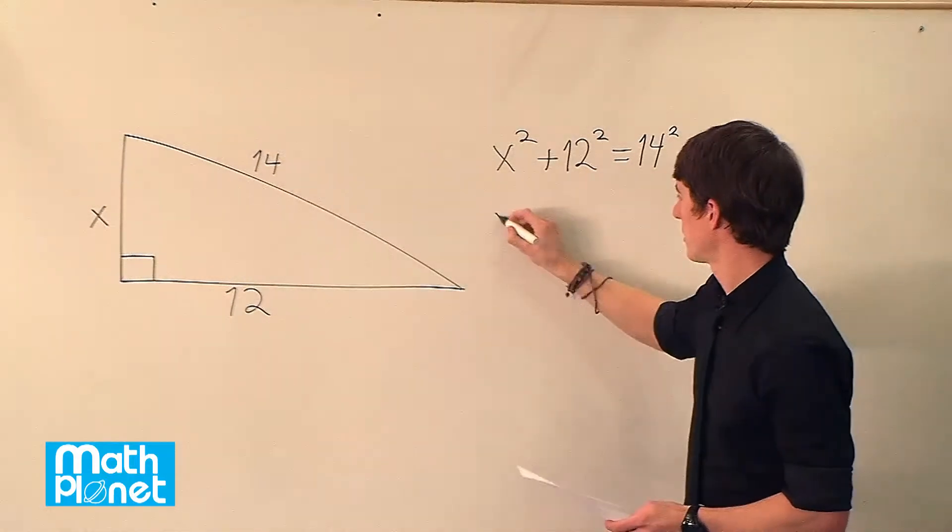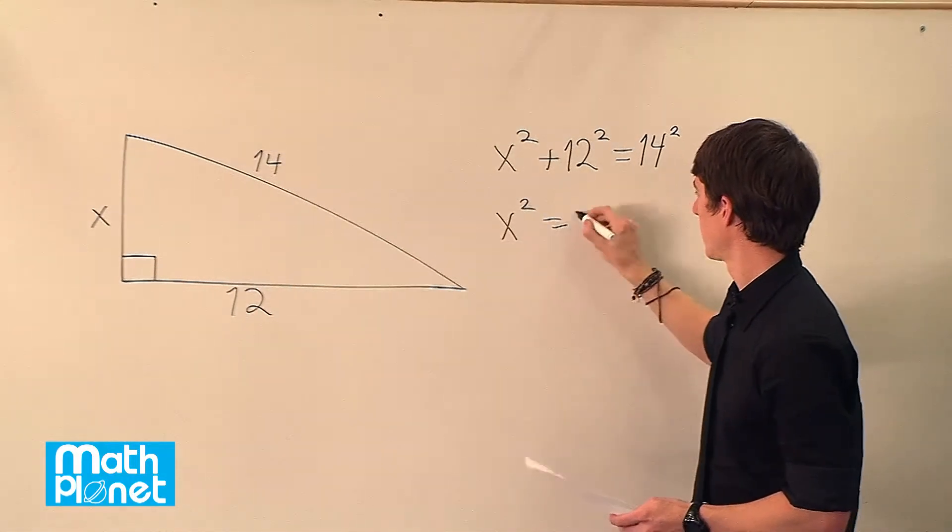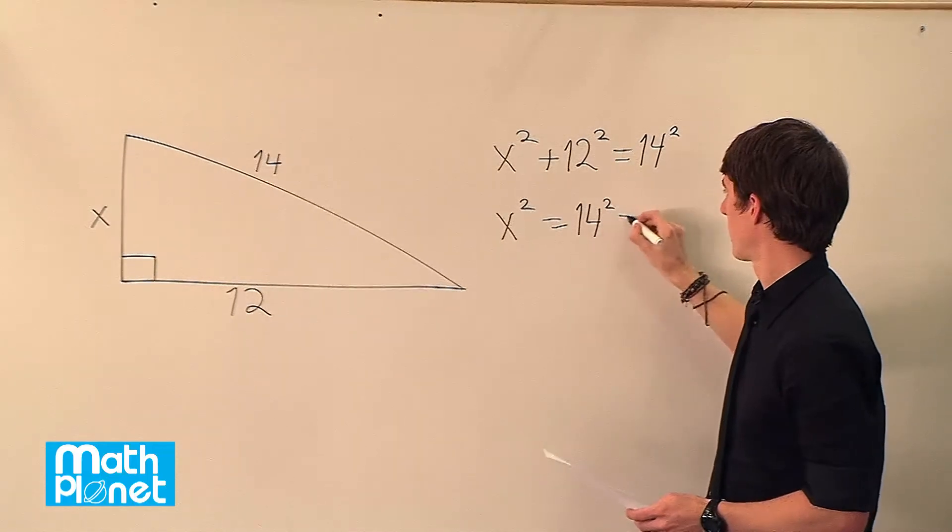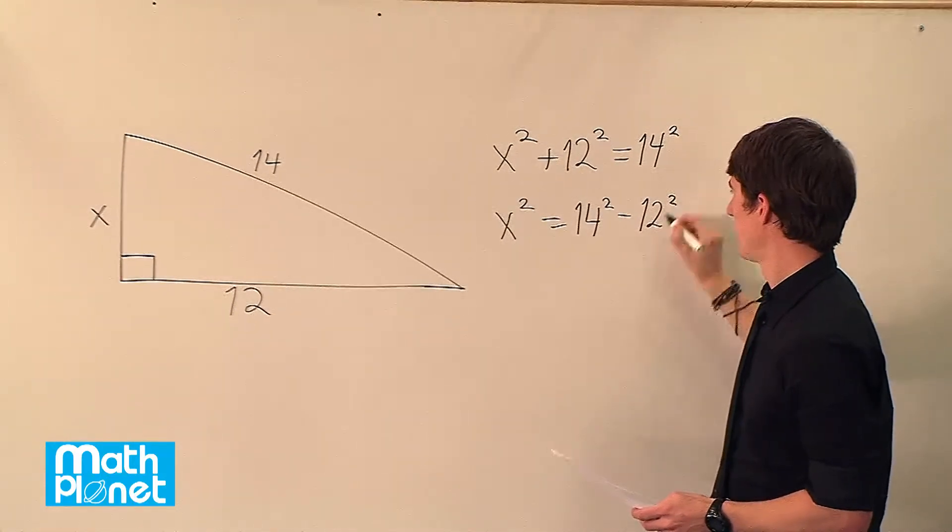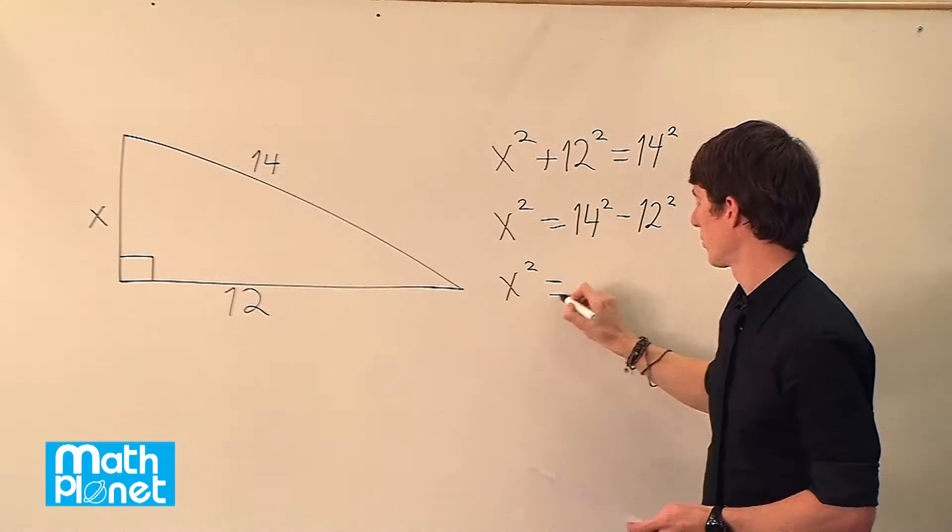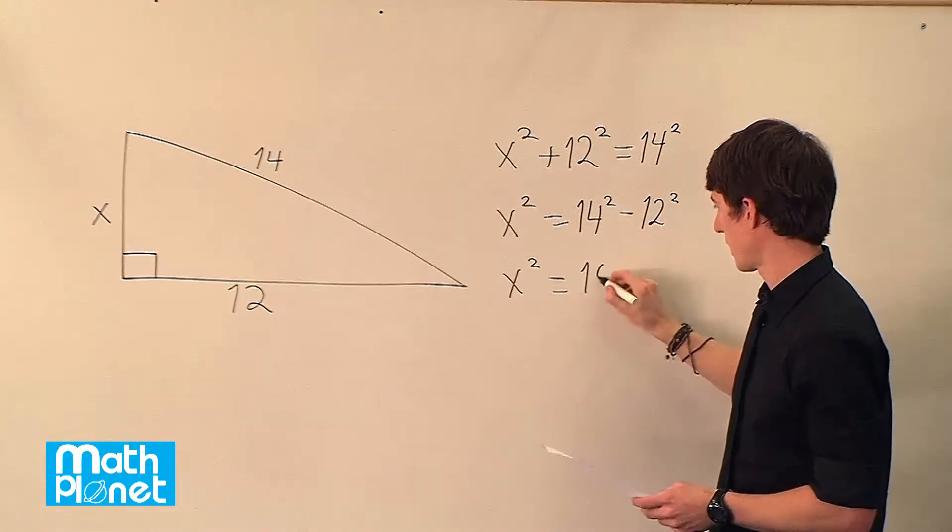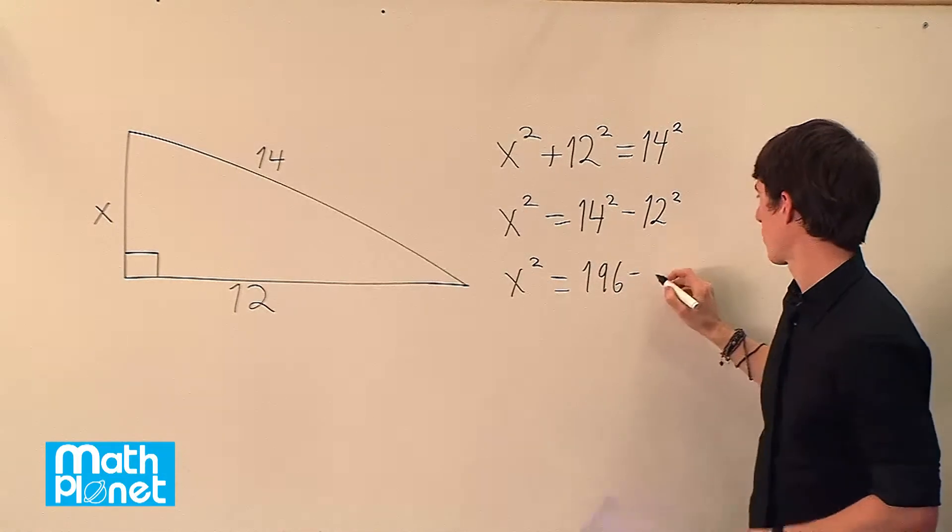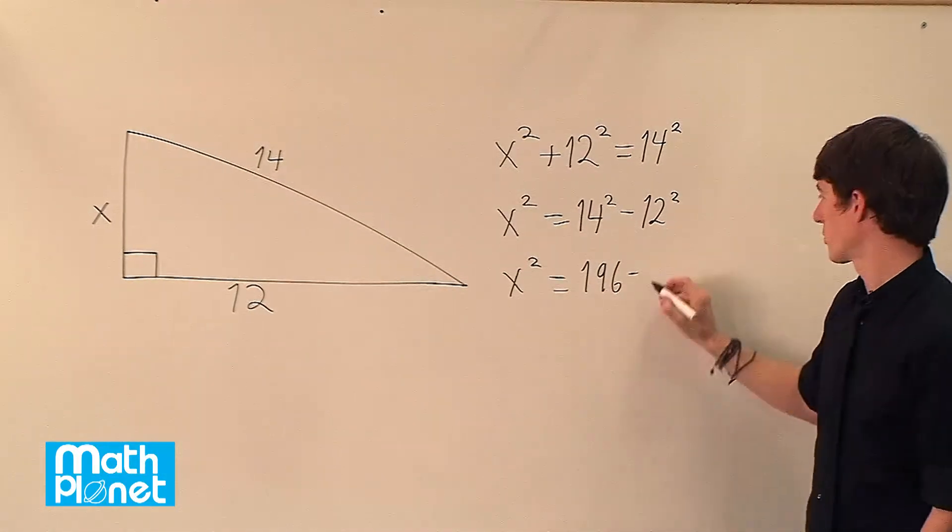So we can move this to the other side. x squared equals 14 squared minus 12 squared. We can expand this out. x squared equals 14 squared is 196 minus 12 squared is a dozen dozen, which is 144.